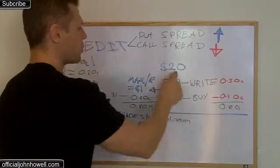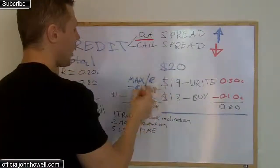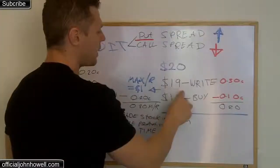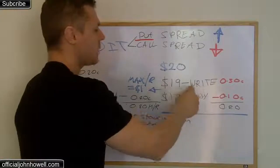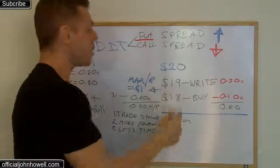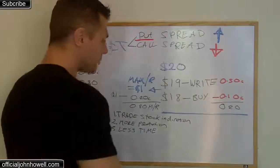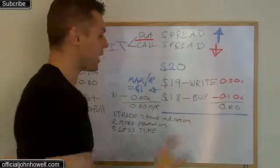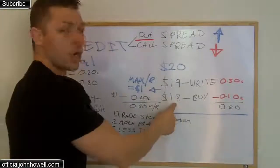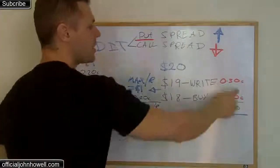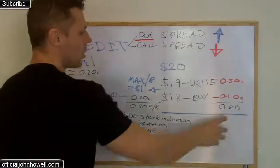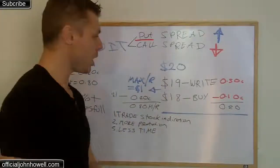Let's look at a put credit spread example. Let's say we have a $20 stock. At $19 we're going to write an option and receive 30 cents for that. Now, our stock is at $20 and we write a $19 option receiving 30 cents. We then buy an option at $18 and pay 10 cents for that protection. So we received 30 cents and paid 10 cents, giving us a net of 20 cents — that's our reward per share.